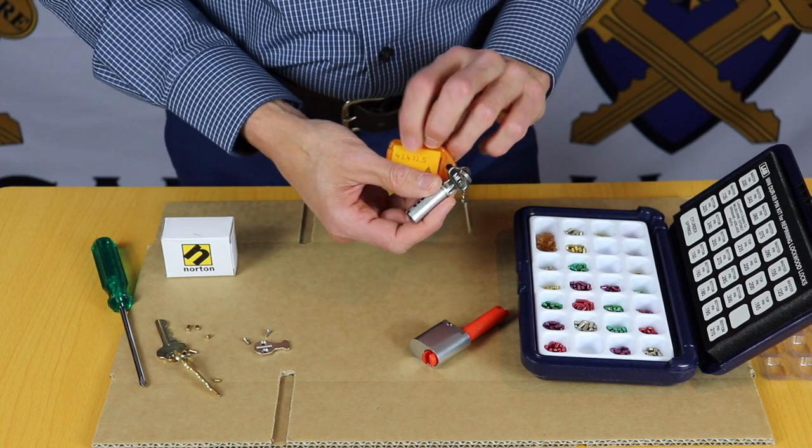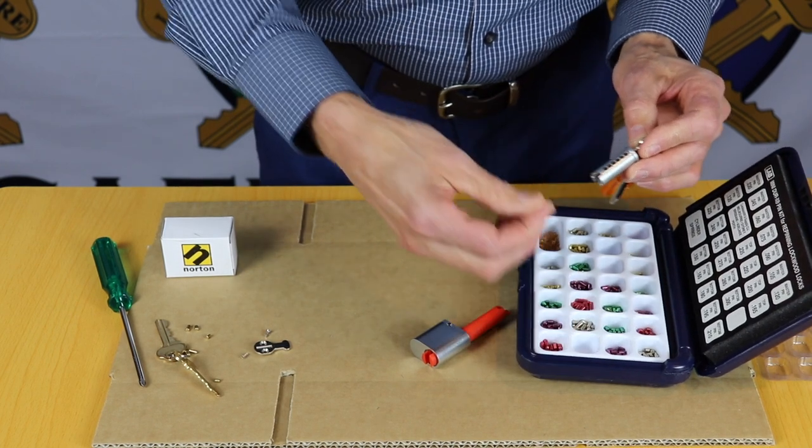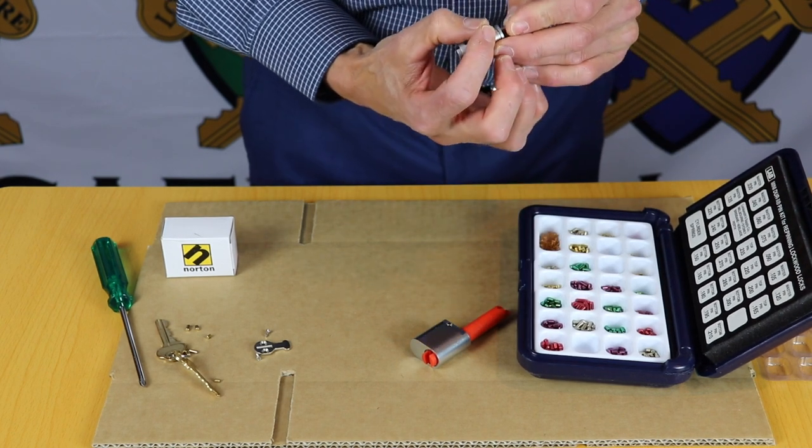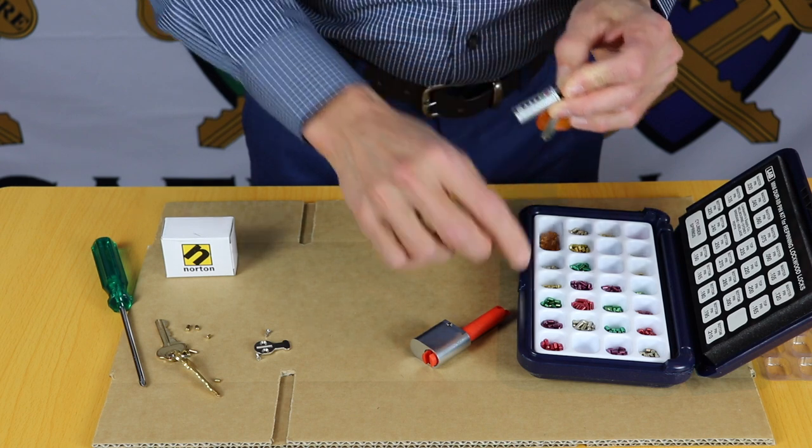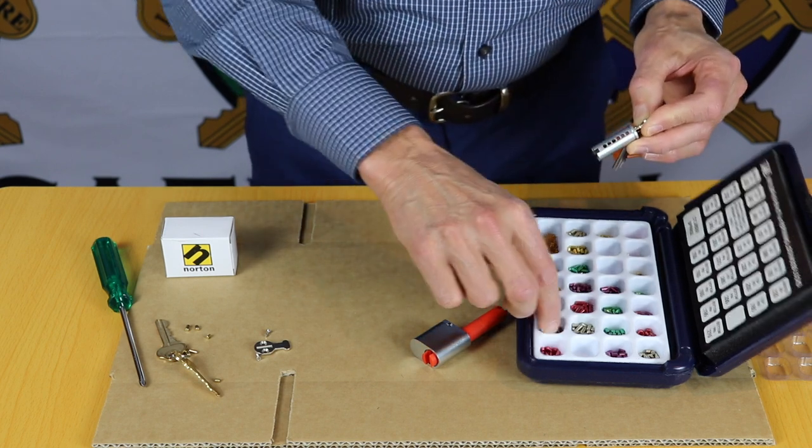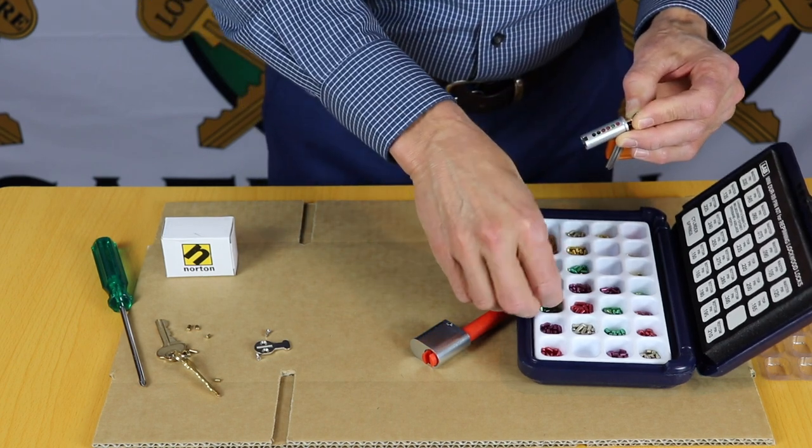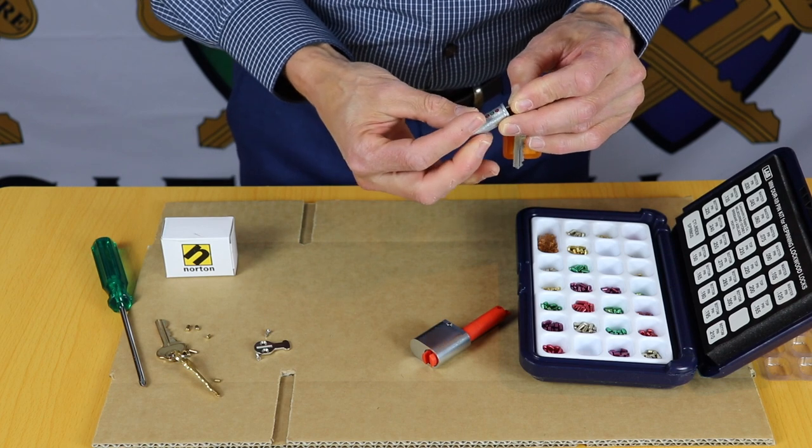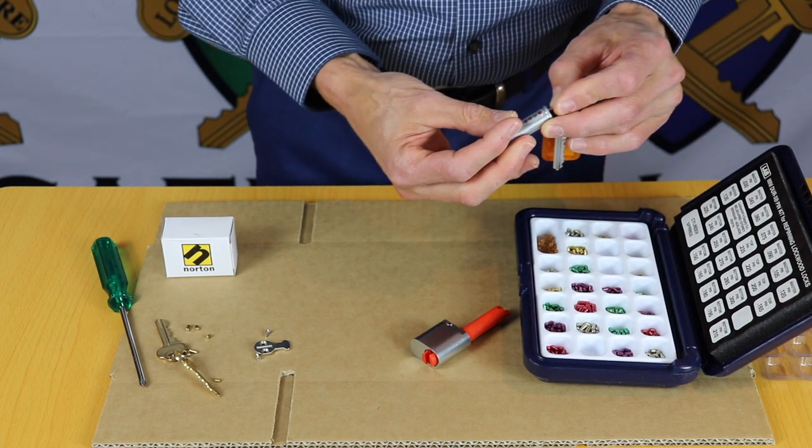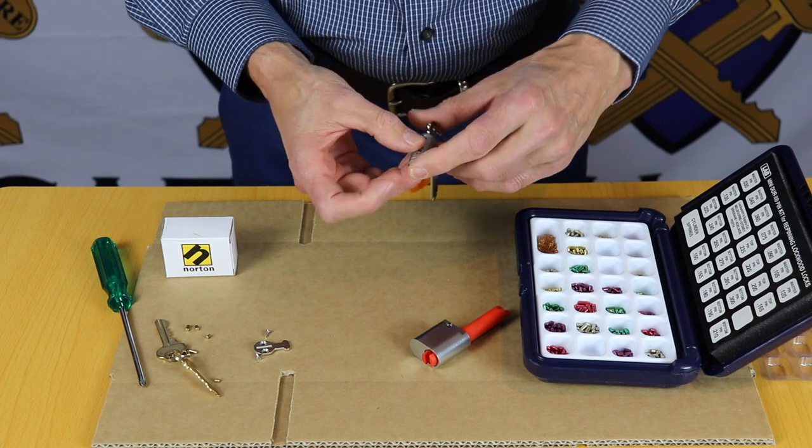So in this case we need to choose the pins 424325, the 3 pin, green pins are number 2, and the last one we need is a gold number 5. Pins are all at the correct level, so they're all at the right height for the shear line to be able to turn the barrel inside the cylinder.